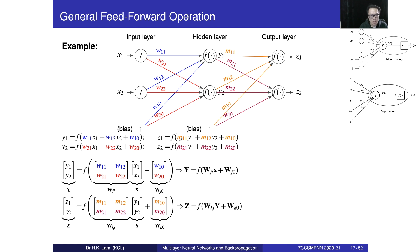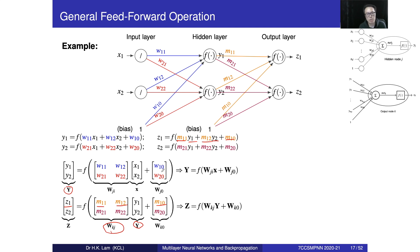We do the same for the output layer using the m values and y values: z1 is m11 and m12 times y1 and y2, plus m10. We call this matrix the capital letter Wkj (in bold face to indicate it is a matrix). Once we know the inputs x1 and x2, along with all weights w11 to w22 and biases w10 and w20, we can compute the capital Y vector, then plug it in and multiply by Wkj plus the bias to get z.